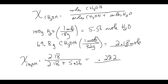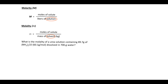That gives a mole fraction of 0.282 for methanol. Since this is a two-component system, the mole fraction of water is simply 1 − 0.282 = 0.718, because the two mole fractions must sum to one.